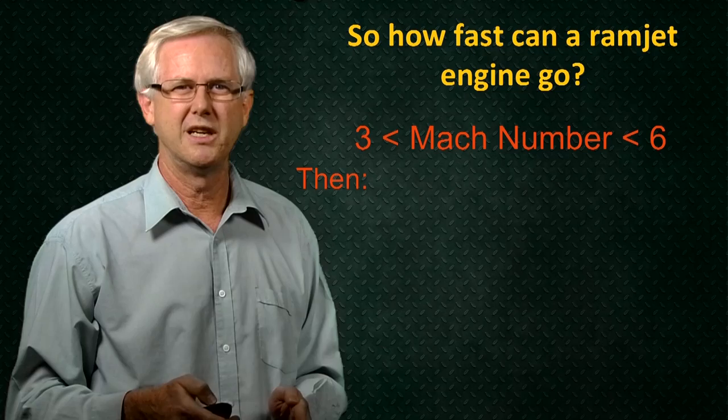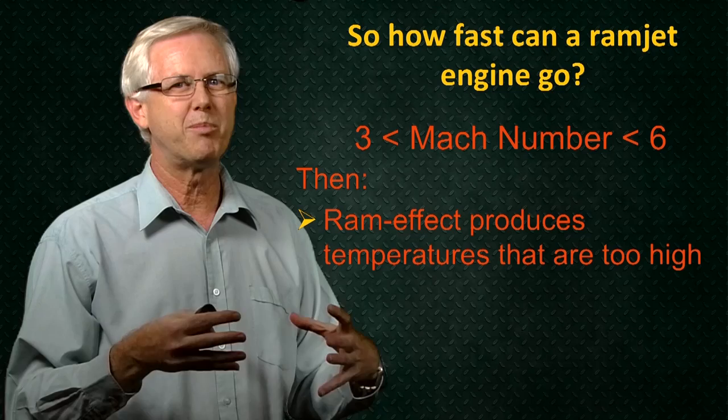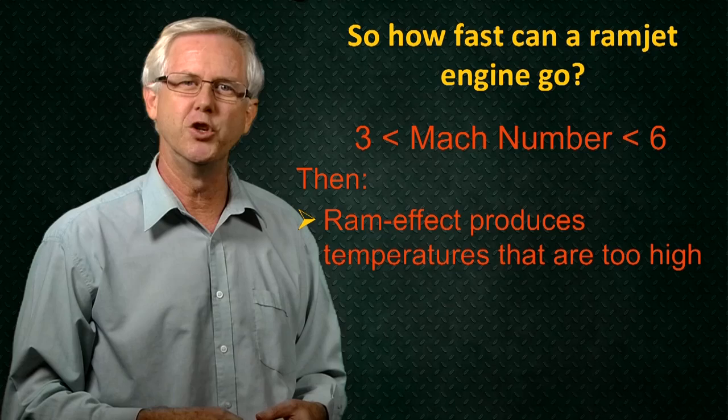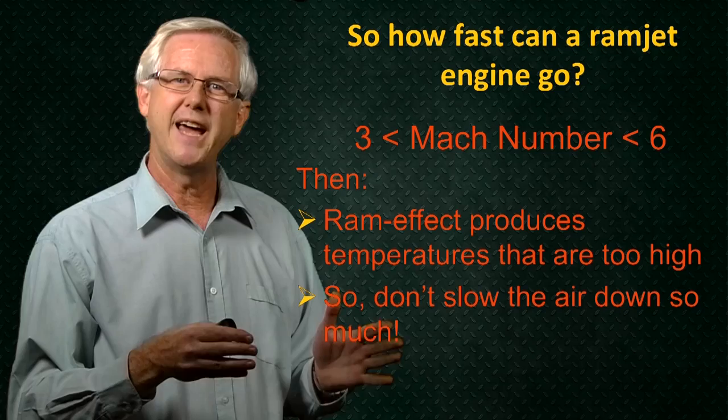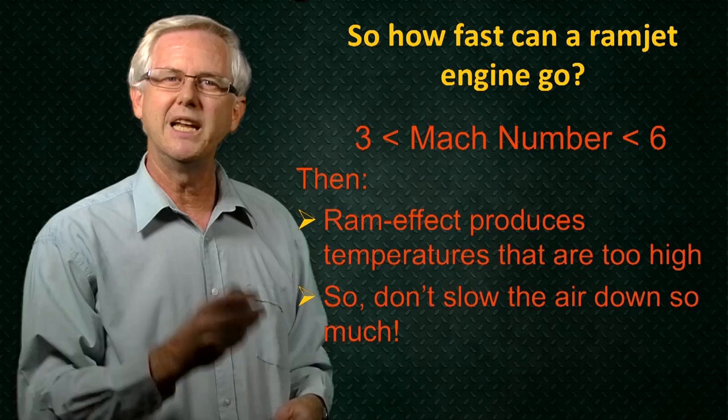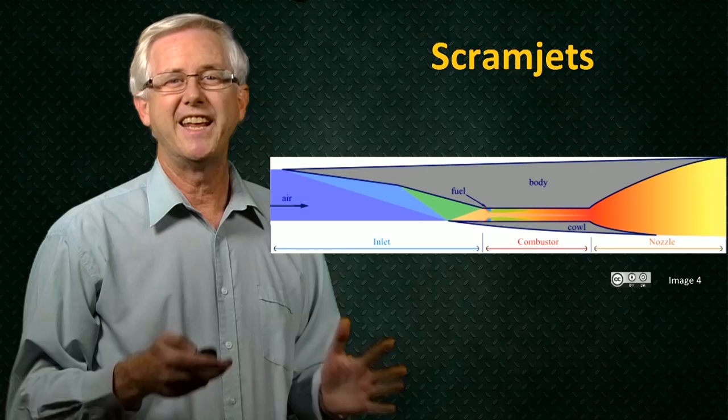Then, if we want to try to push a ramjet up to higher speeds, just the ram effect of forcing the air into the engine raises the pressure and temperature up to levels where the temperature is just too high to be able to do good combustion. So we really don't need to slow the air down to subsonic conditions. What we can do instead is slow the flow down just a little bit, thus raising its pressure and temperature a bit, but leave it supersonic and see if we can burn the fuel in the air.